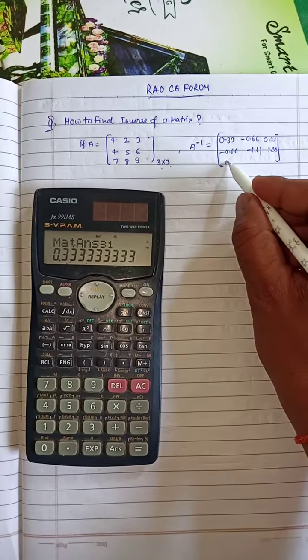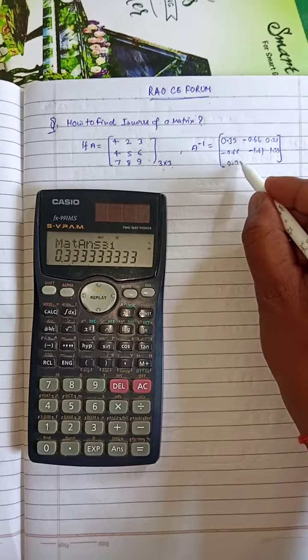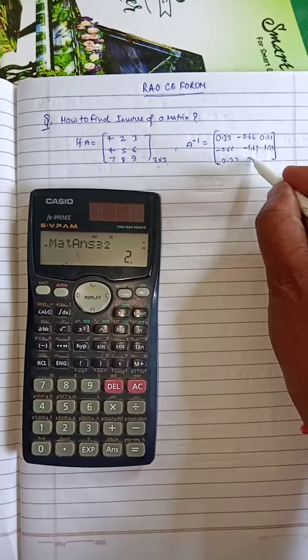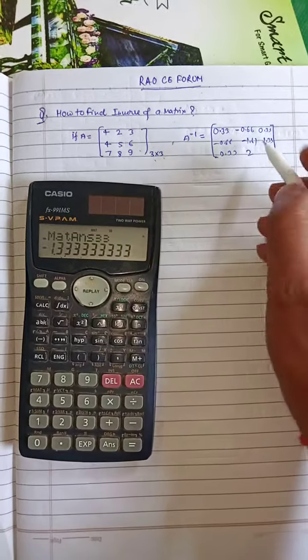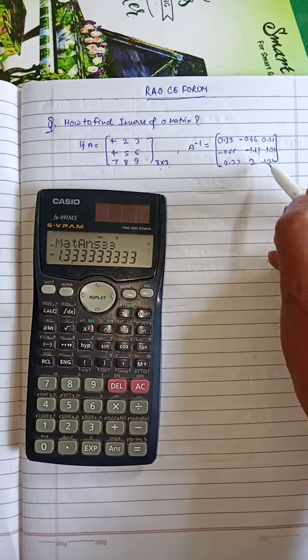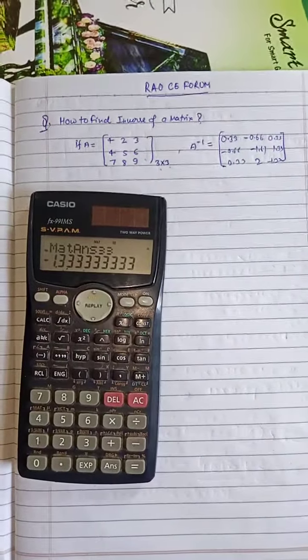Third row, first column: 1.33. Third row, second column: 2. Third row, third column: minus 1.33. So you can find the inverse of a matrix this way. Thank you.